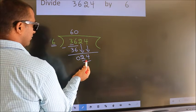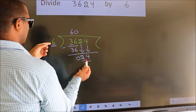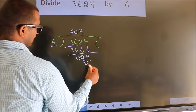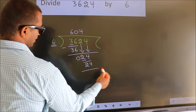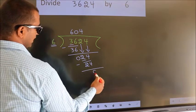When do we get 24 in the 6 table? 6 times 4 is 24. Now we subtract. We get 0.